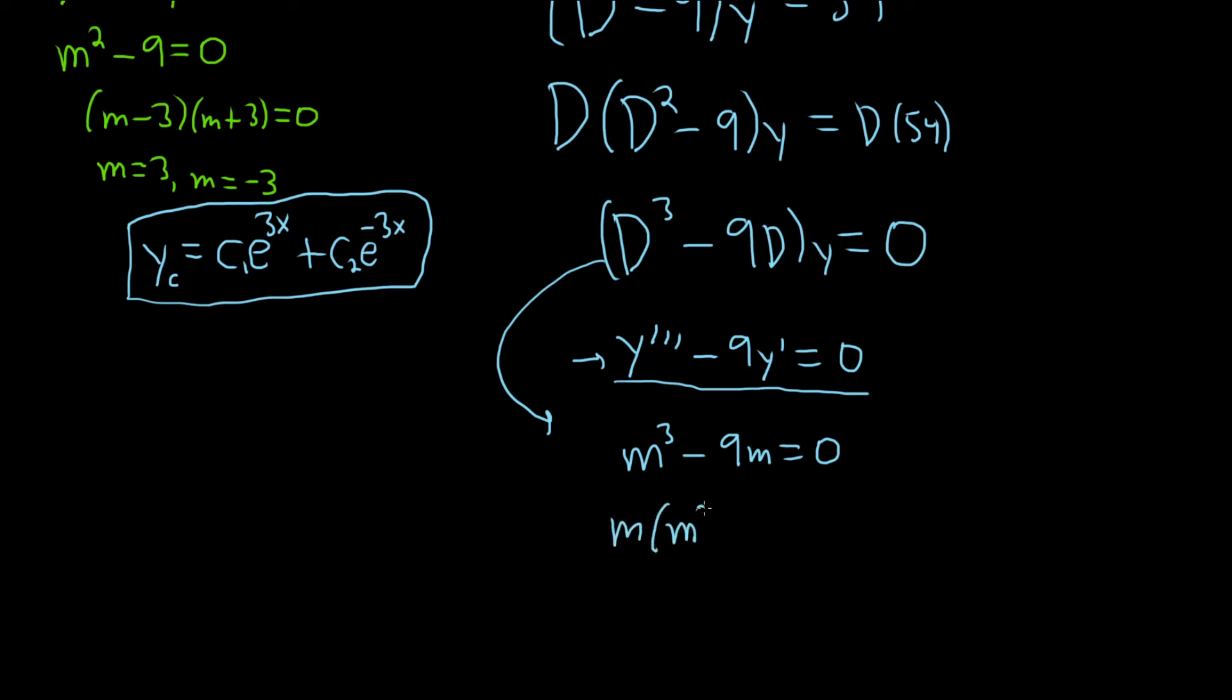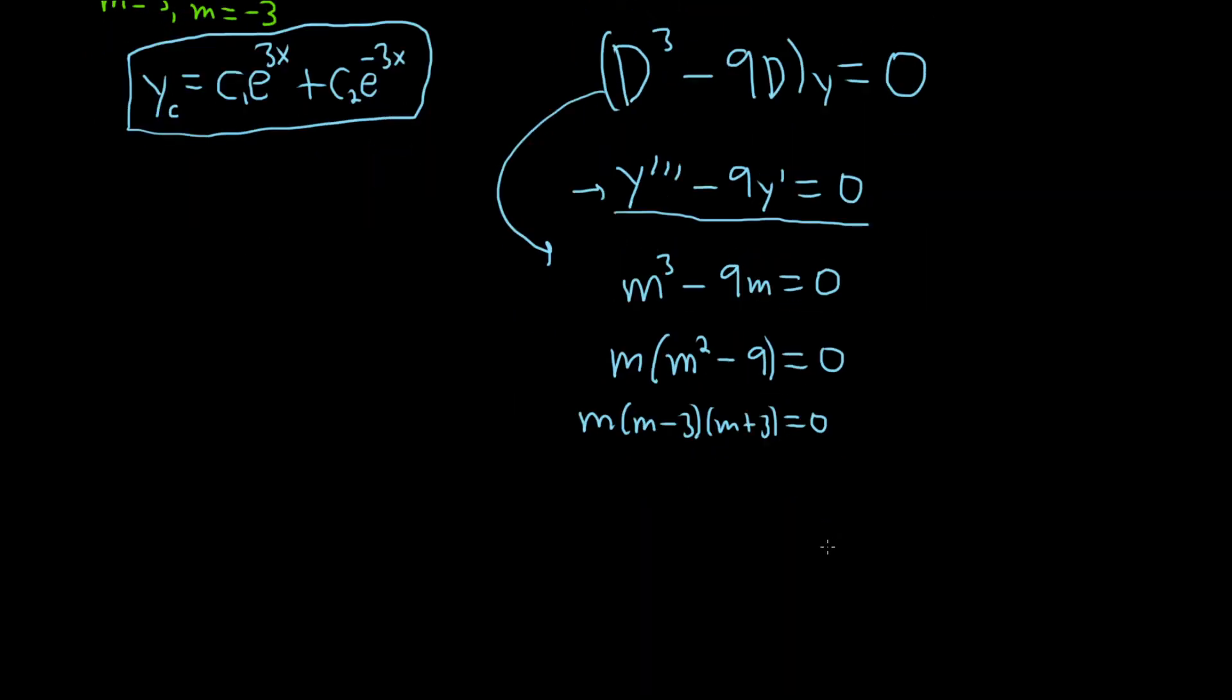So now you factor out an m. So we have m squared minus 9, and that's equal to 0. And then so here we have m, m minus 3, m plus 3, and that's equal to 0. So we have three different answers here. m equals 0, m equals 3, m equals negative 3.